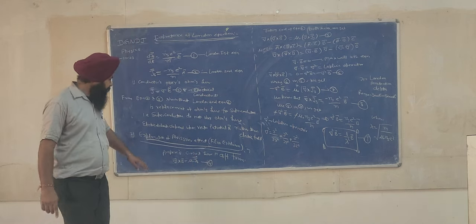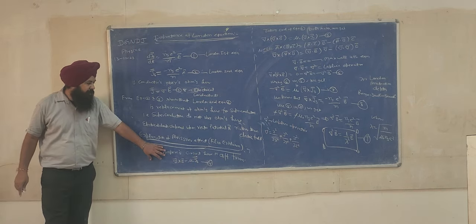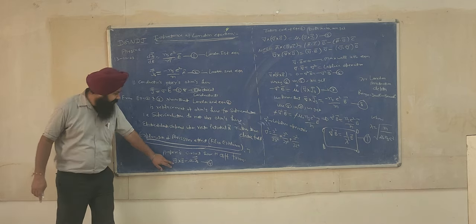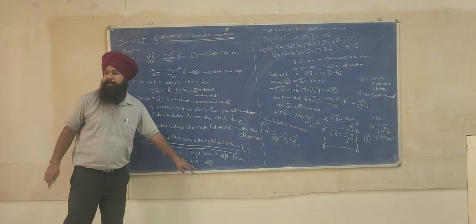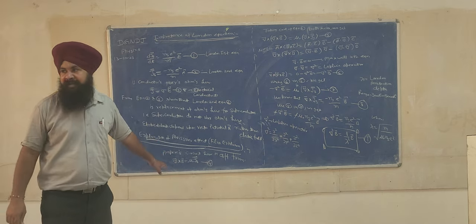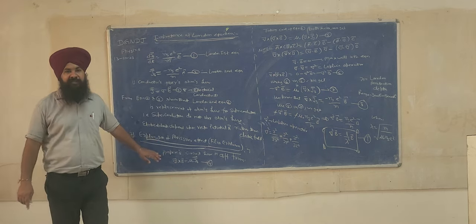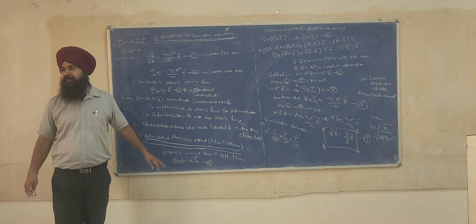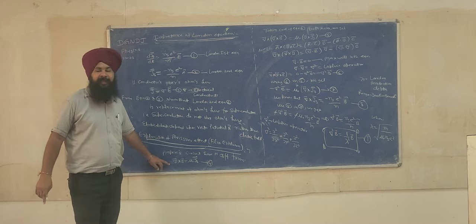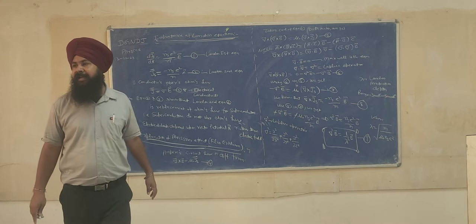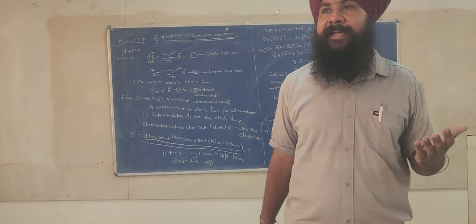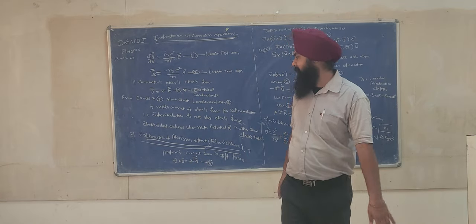Now let us see how these two equations help solve the Meissner effect — flux expulsion and flux penetration. This is Ampere's law in differential form: ∇×B = μ₀Js. This is Ampere's law in differential form. 'Differential' means derivative, because del (∇) means derivative: ∇ = î(∂/∂x) + ĵ(∂/∂y) + k̂(∂/∂z).